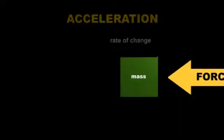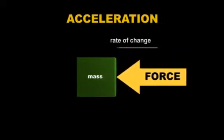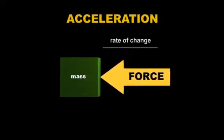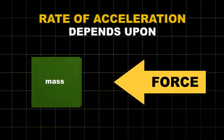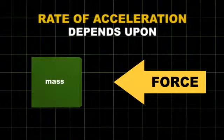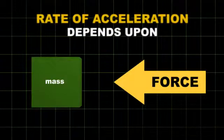When an unbalanced force acts upon an object, the motion of the object changes. The rate of this change over time is called acceleration. Acceleration depends upon two variables: the mass of the object and the magnitude of the applied force.